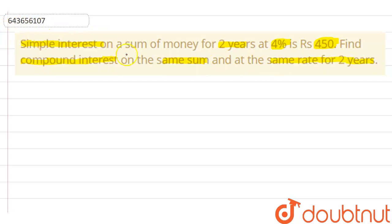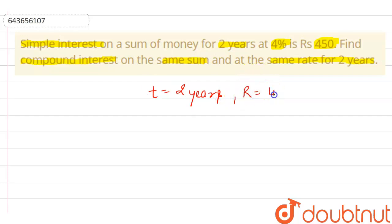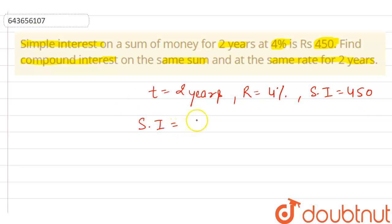So here we are having simple interest on a sum of money for two years, that means T equals two years, at four percent, that means rate R is four percent, and simple interest equals rupees 450. We know that the formula for simple interest is SI equals P into R into T divided by 100.